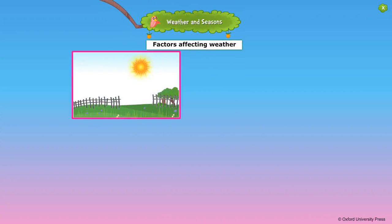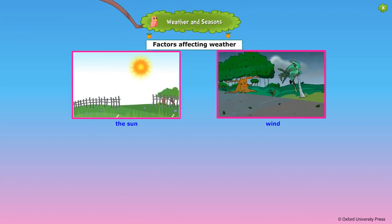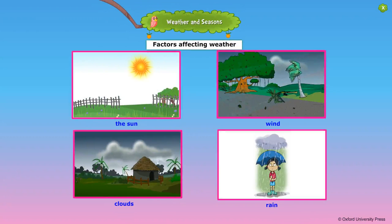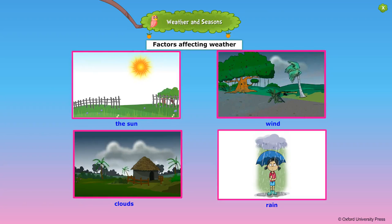Weather refers to the atmospheric conditions of a day for a short period of time, due to natural factors such as temperature, clouds, wind, rainfall, and so on. The sun is the most important factor that decides air temperature and therefore weather.